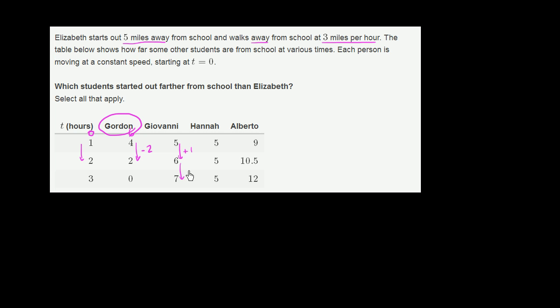And then after another hour, he is 7 miles away. So every hour that goes by, he's a mile further. He's going 1 mile an hour away from school. So where was he at time equal 0? Well, he would have been a mile closer to school relative to time equal 1. So he would have been 4 miles away. So he did not start out farther than Elizabeth, who started out 5 miles away.